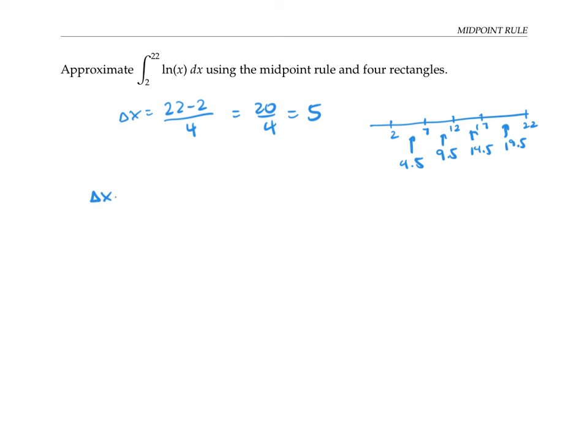So now I need to add up delta x times f of 4.5 plus delta x f of 9.5, and so on, where my function f is ln of x. So this gives the following expression.